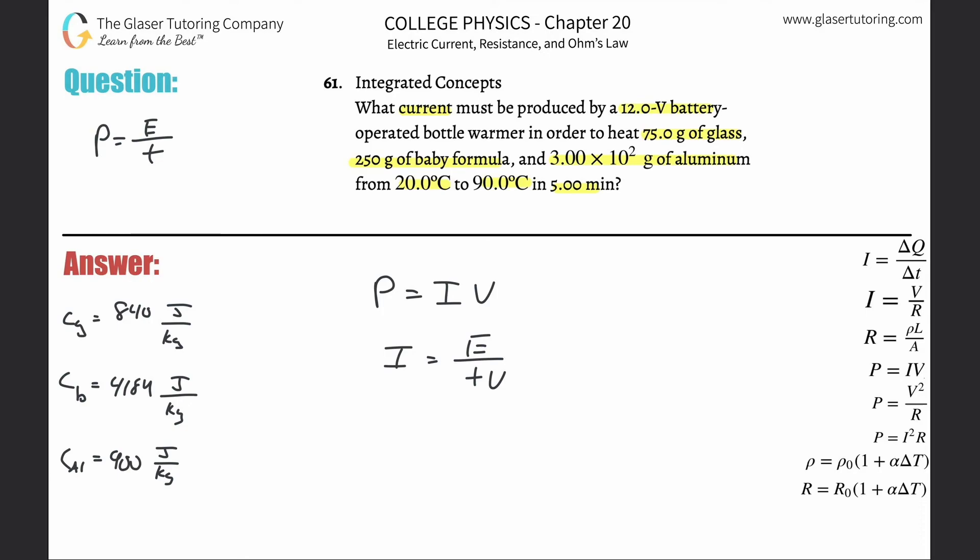So now we have our little formula. Now I need to know the time that this is going on. Oh, they told me five minutes, just remember we're going to need that in seconds. Voltage - oh wonderful, they gave me the voltage. Energy - well they didn't give me the energy, but we got to find the energy required to raise the temperature of those three objects: glass, baby formula, and aluminum.